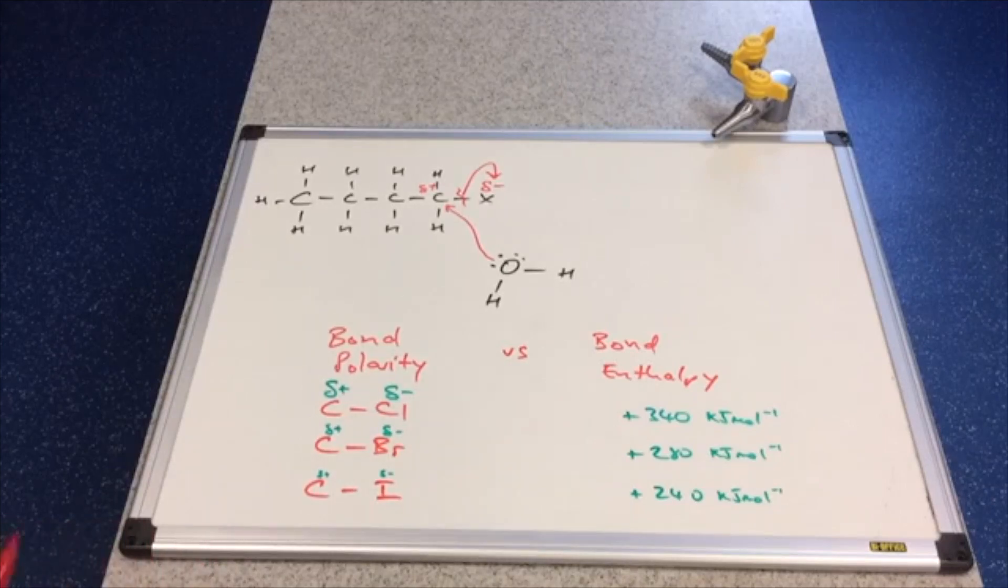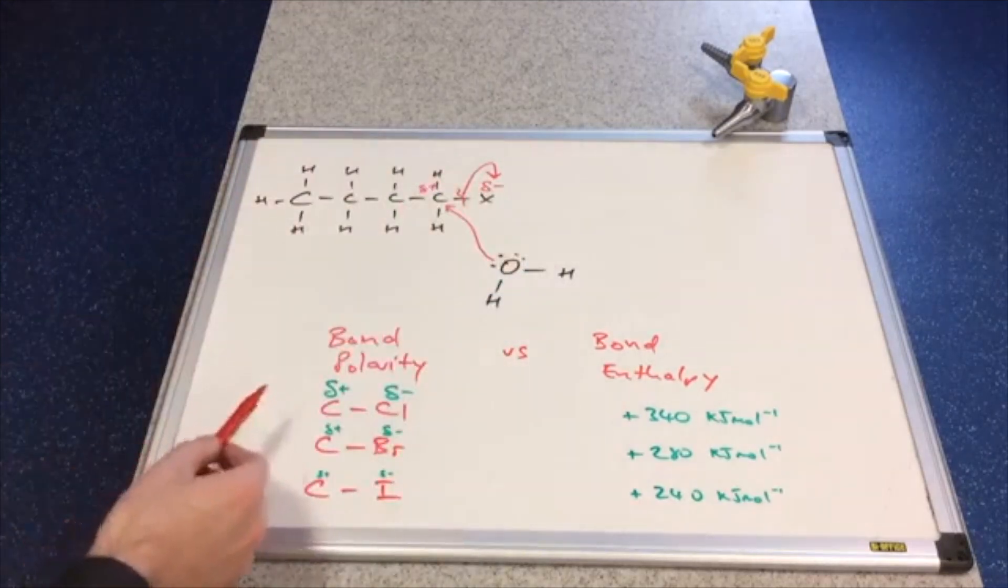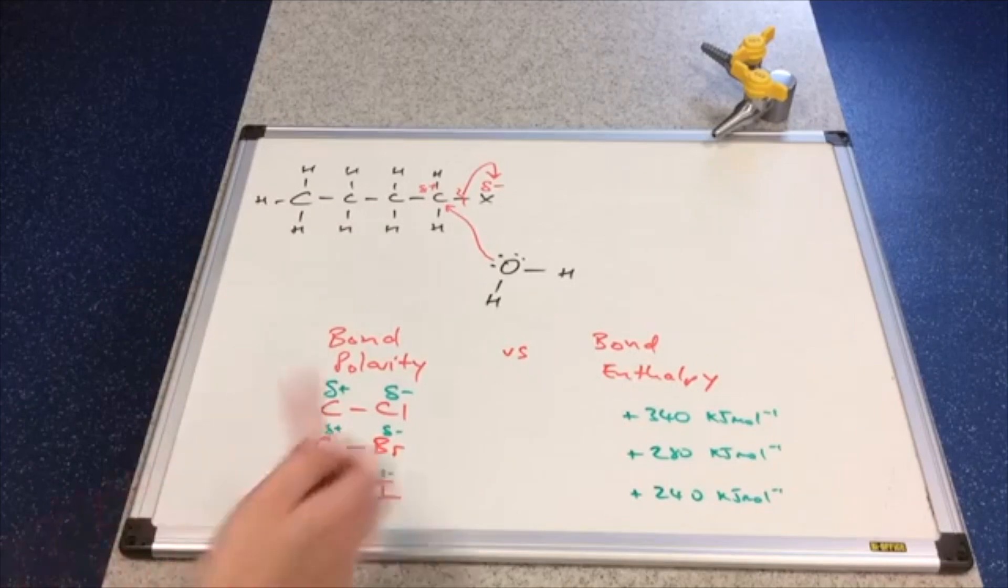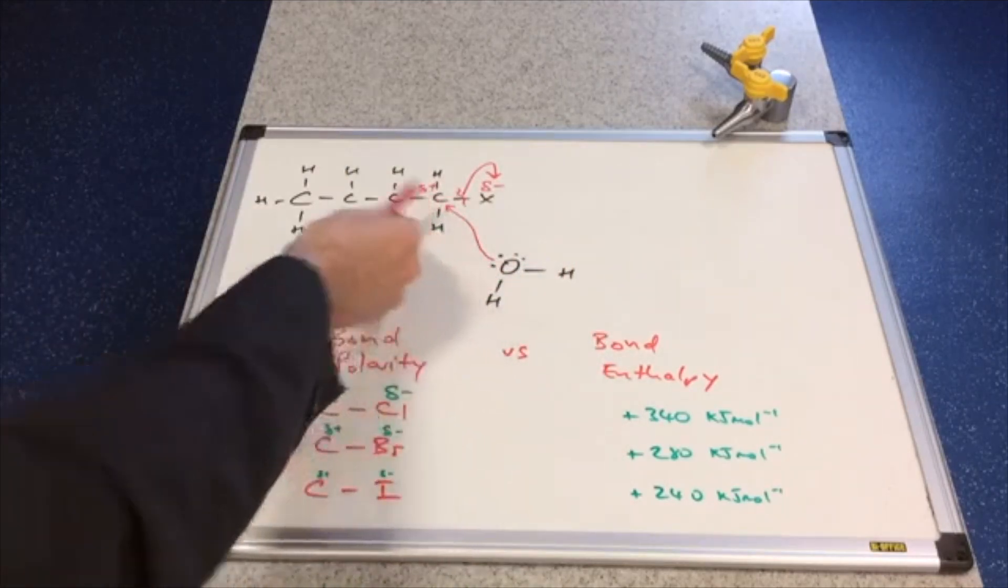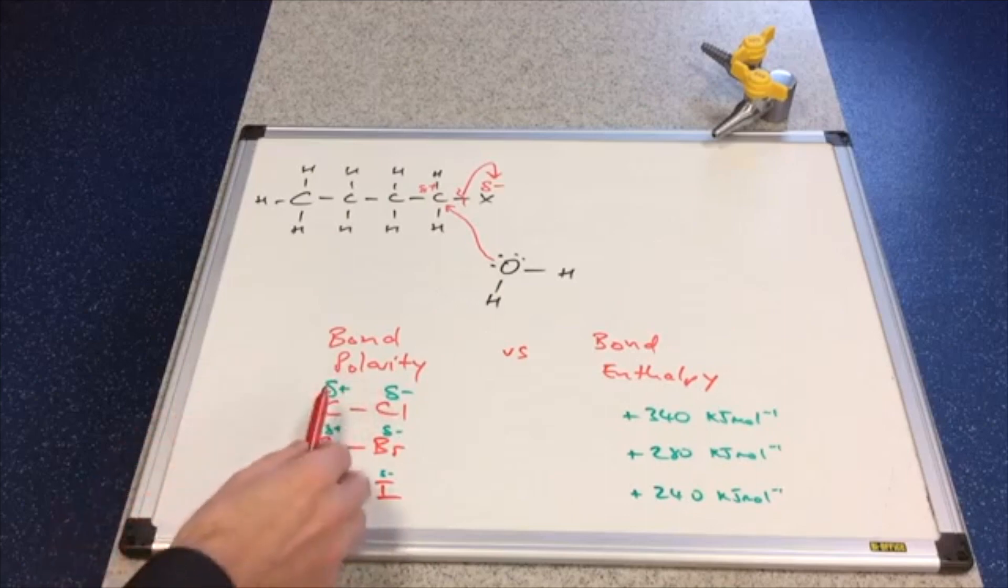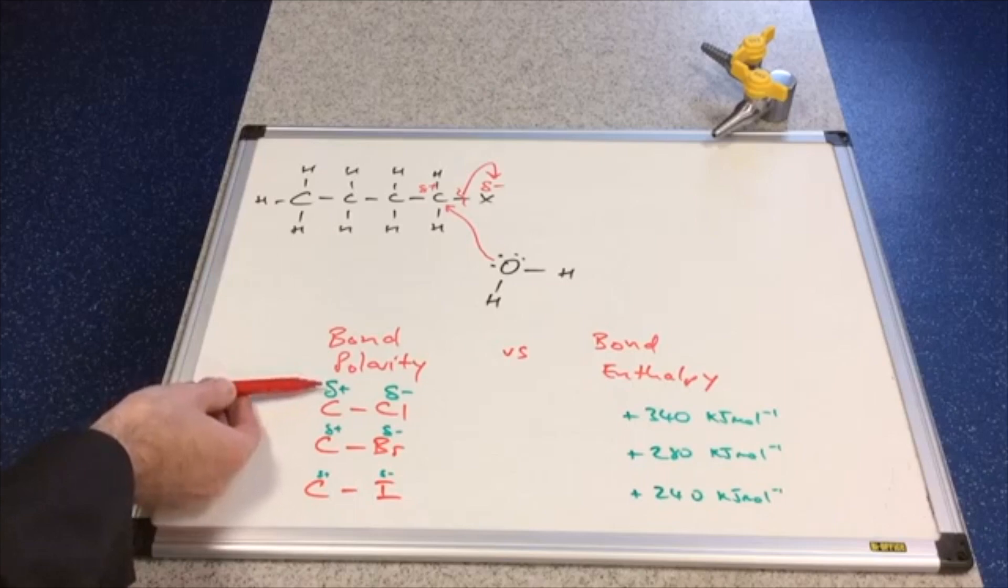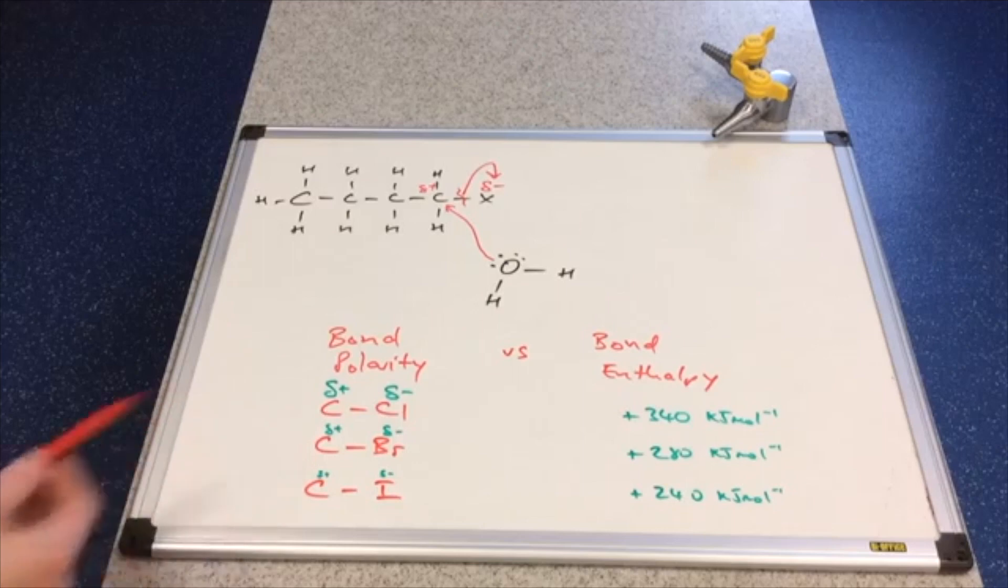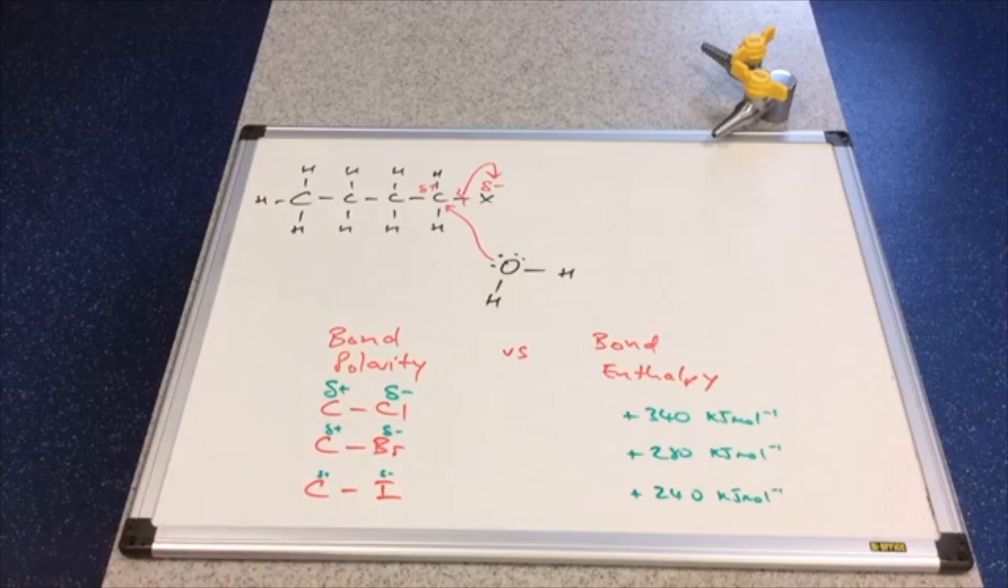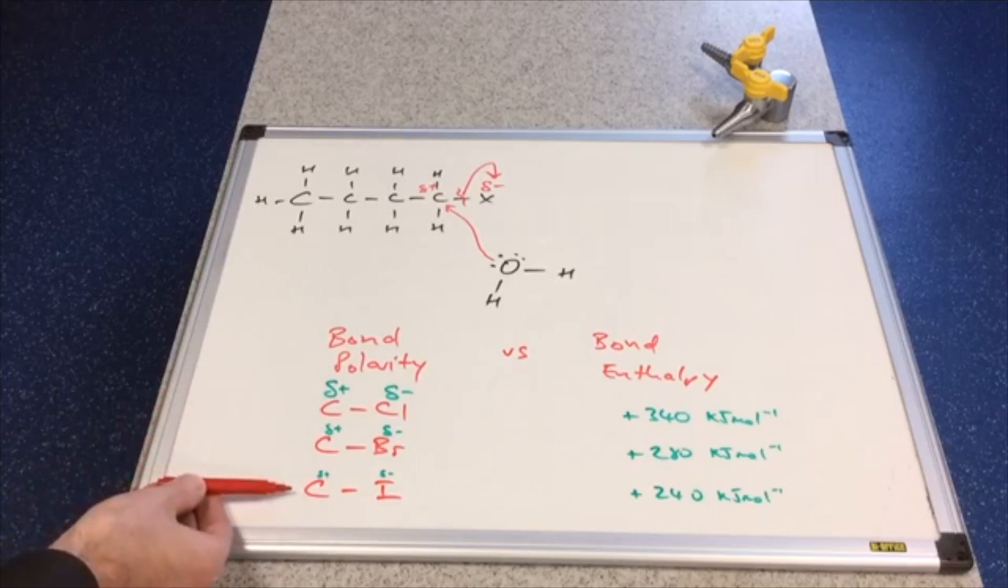There's two factors at play. We've got the bond polarity - the size of the dipole across this bond - and that's going to influence how strongly the nucleophile is attracted. Remember, water is a nucleophile, an electron pair donor. The carbon-chlorine bond is going to have the largest dipole across it, which I've represented as a large green delta plus delta minus. The dipoles are getting smaller because the electronegativities in the halogen atom are getting lower. So the nucleophile will be most strongly attracted to this carbon, less strongly attracted to this carbon.